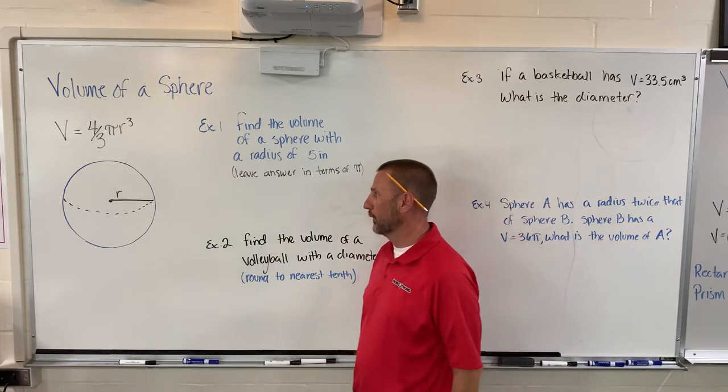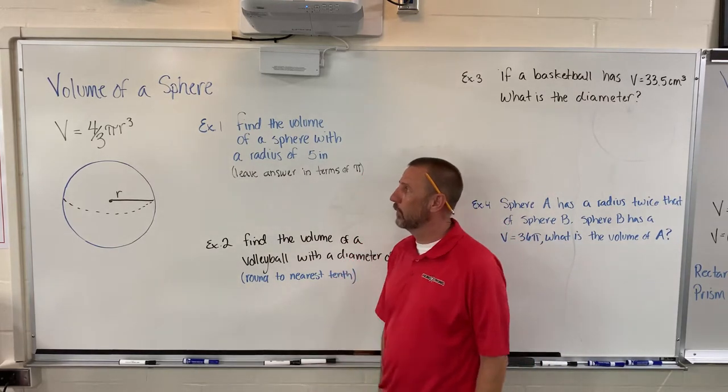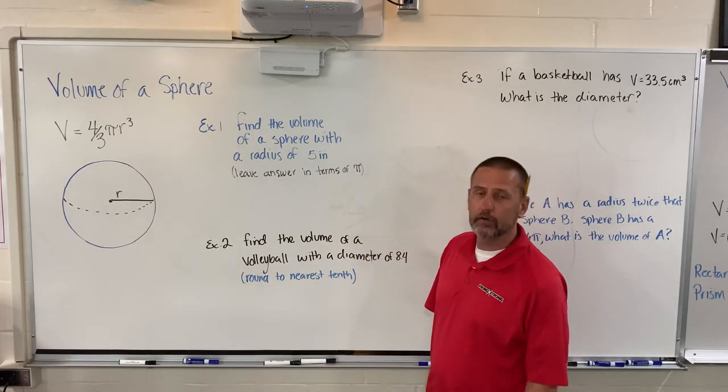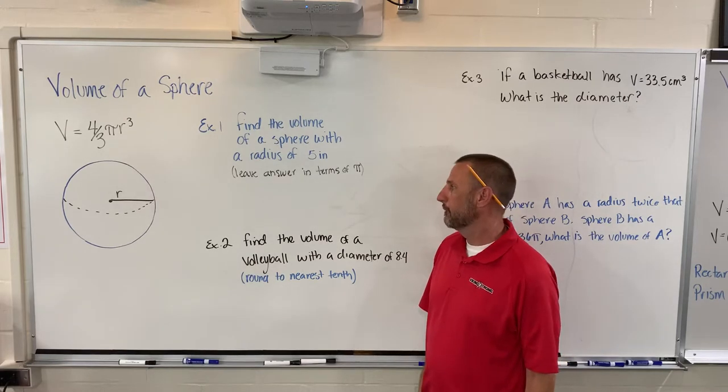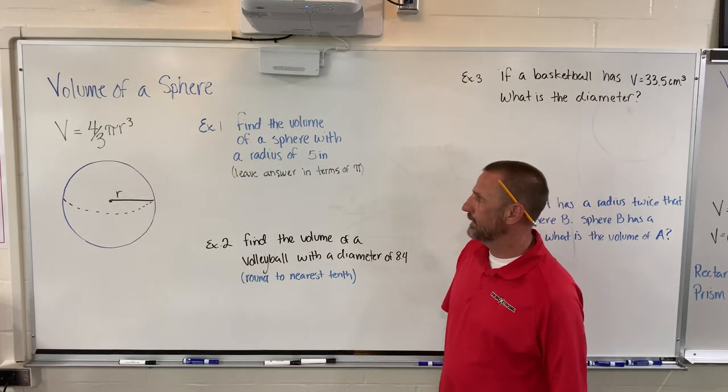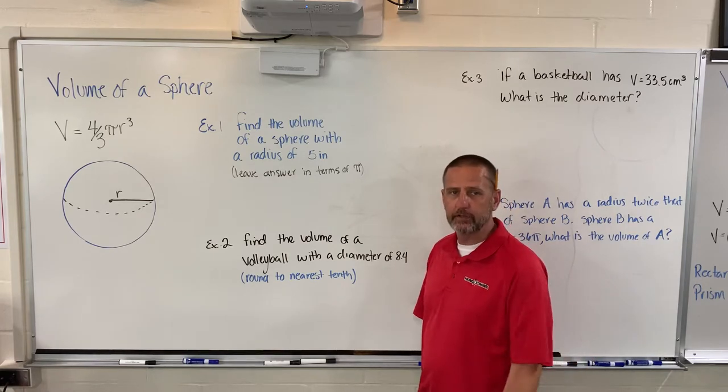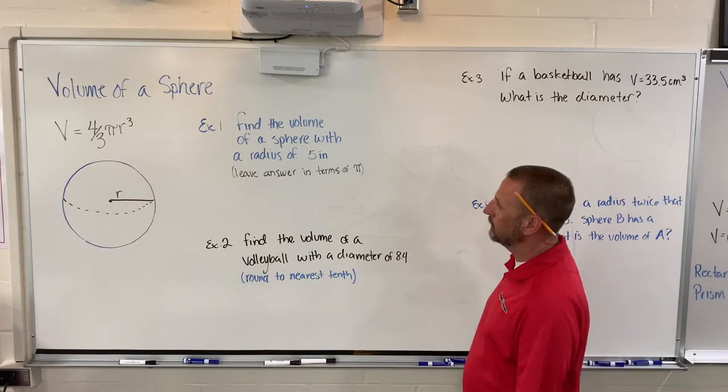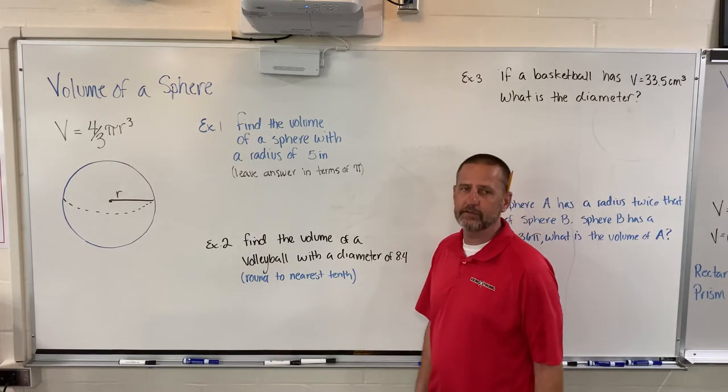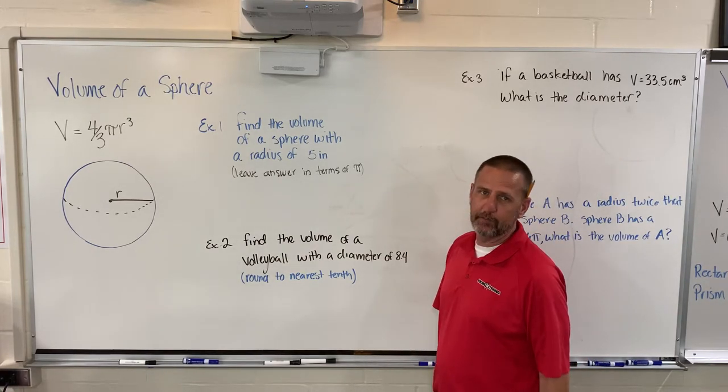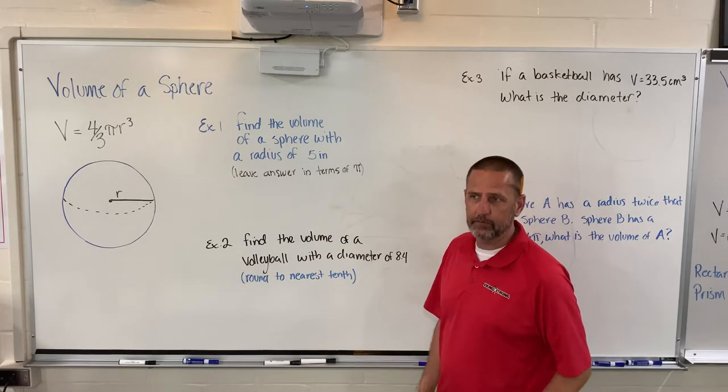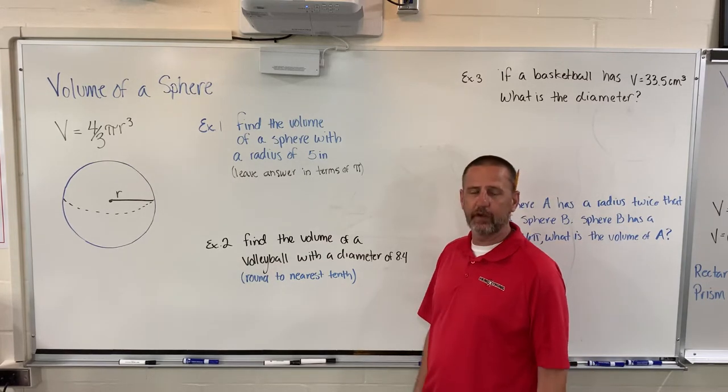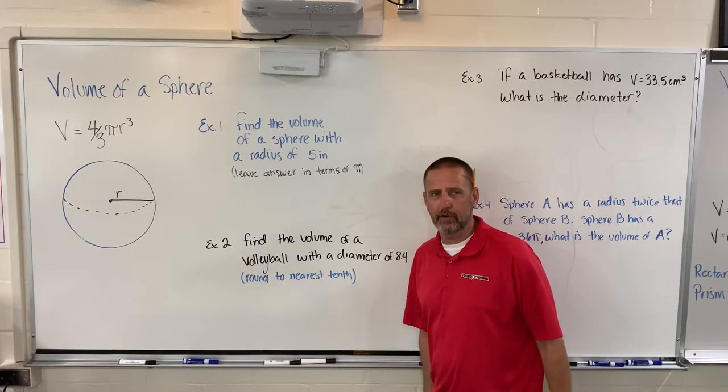The formula we're going to use is volume equals 4 pi r cubed over 3. r is our radius and 4 thirds is the multiplier we need to use each time. We're going to have a lot of fractions so we need to make sure we sort those fractions out each time. I'll walk through how we deal with fractions, how we simplify if we can, and when we don't use fractions.